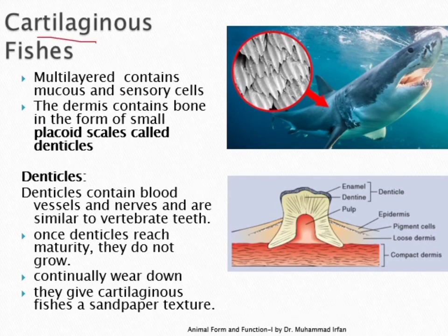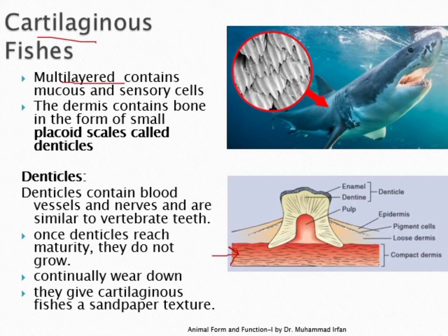Placoid scales in cartilaginous fishes are also called dermal denticles. They grow from the dermis (connective tissue) and have a central pulp cavity — like teeth — supplied with blood vessels. They are surrounded by a conical layer of dentine, which is calcified cartilage hardened by deposition of calcium. The outer layer is made of an inorganic substance — calcium — forming enamel. Like teeth, these scales cannot grow in size, but their number can increase when the fish grows.